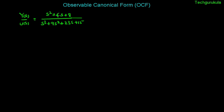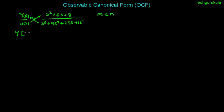In this video we are going to see, for a given transfer function, how we represent it in observable canonical form where the numerator polynomial order is less than the denominator polynomial order. The first step is cross multiplication, where the denominator polynomial is multiplied with y(s) and the numerator polynomial is multiplied with u(s). So y times the denominator polynomial equals input u times the numerator polynomial.